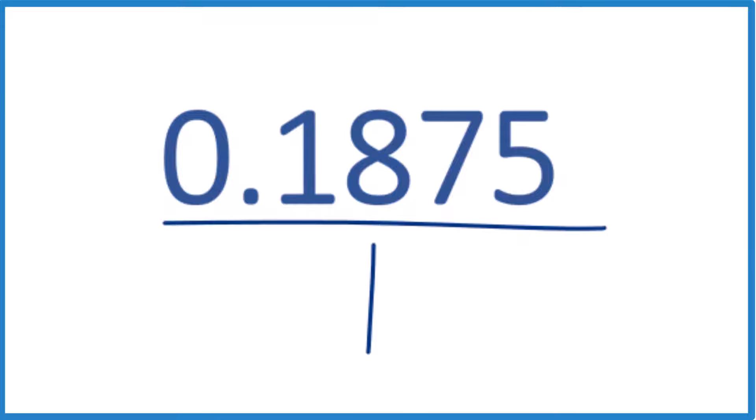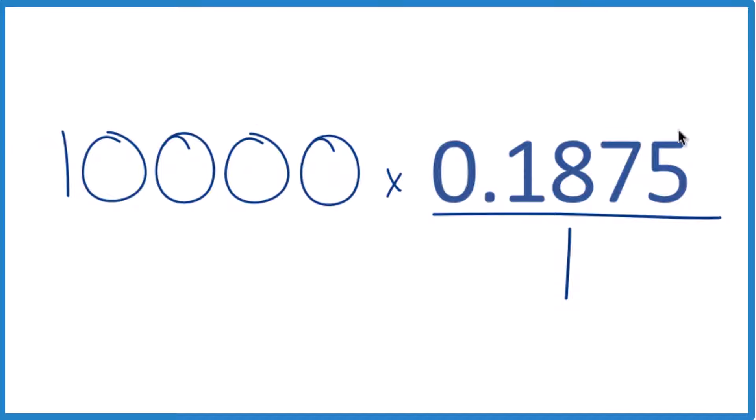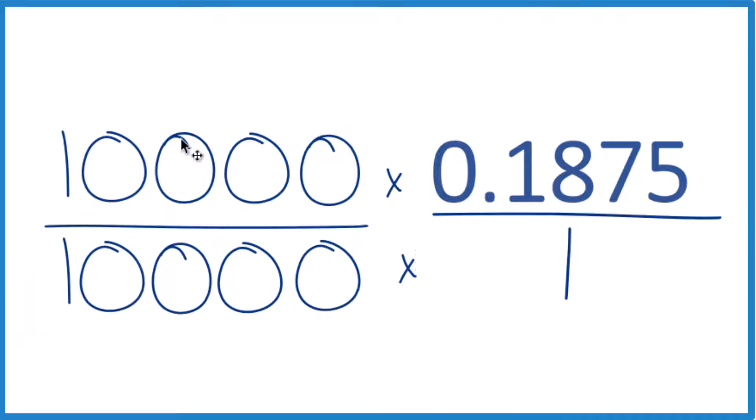We're going to take and multiply 10,000 times our 0.1875. But we can't just multiply the numerator. We do need to multiply the denominator as well. It's because 10,000 over 10,000 is equal to 1. So we're just multiplying by 1. We don't change anything.